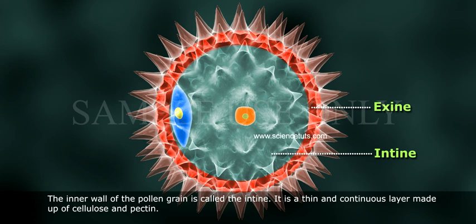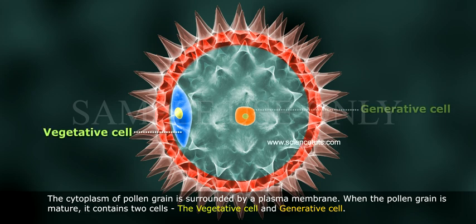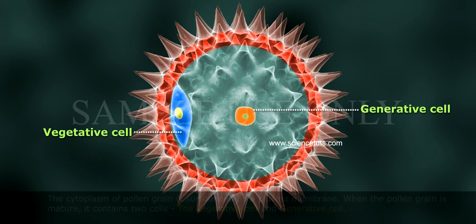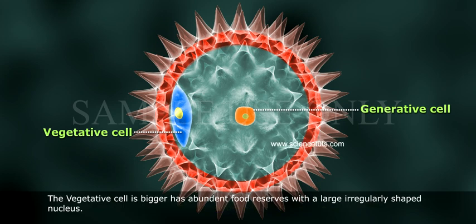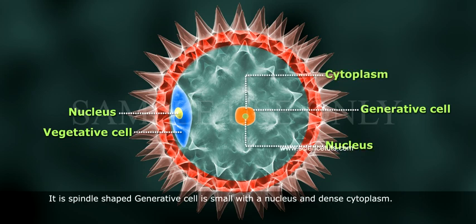The inner wall of the pollen grain is called the intine. It is a thin and continuous layer made up of cellulose and pectin. The cytoplasm of the pollen grain is surrounded by a plasma membrane. When the pollen grain is mature, it contains two cells: the vegetative cell and the generative cell. The vegetative cell is bigger, with abundant food reserves and a large irregularly shaped nucleus. The generative cell is spindle-shaped, small, with a nucleus and dense cytoplasm.